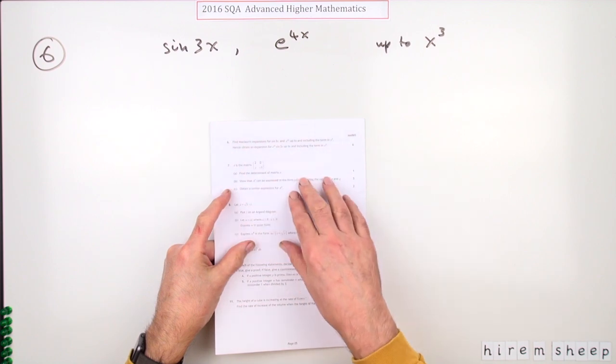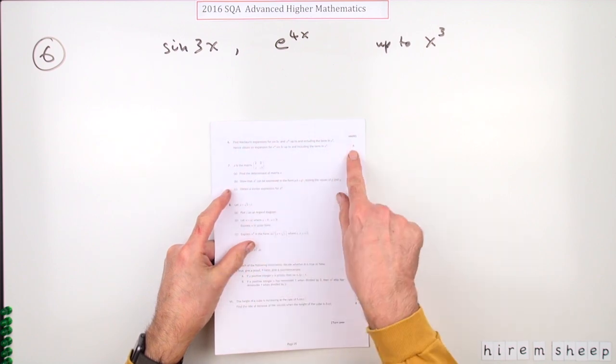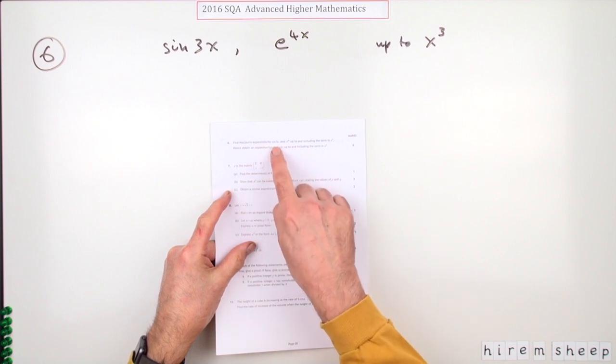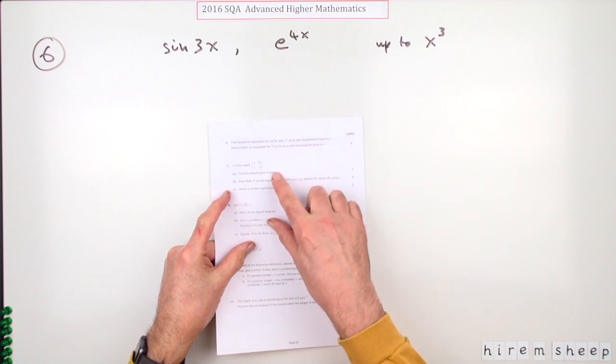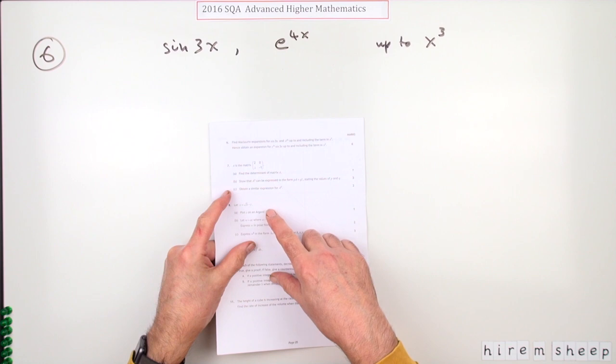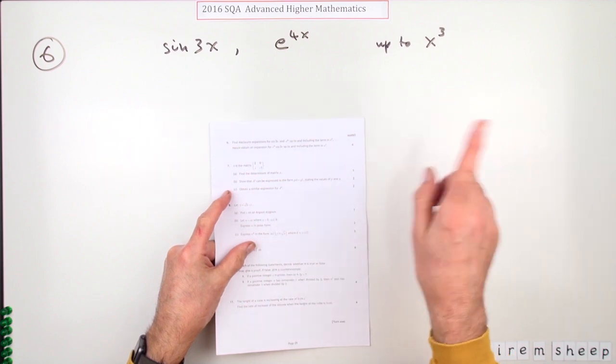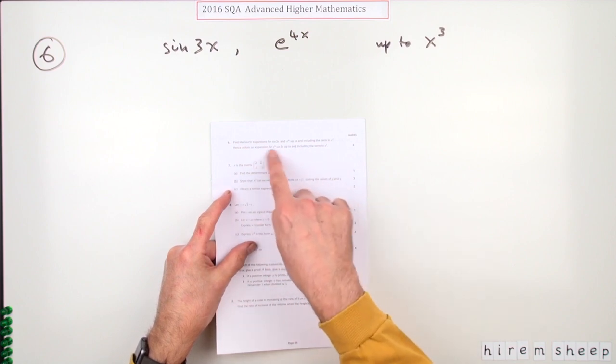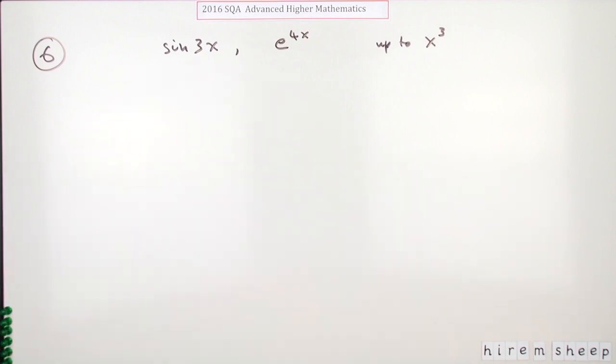Number six then from the 2016 Advanced Higher Maths, we got six marks for a McLaurin's expansion. In fact, look at this one. Signs and E's. Those are ones that you know. You can save a lot of working out if you just memorize E to the X and then get this product of these two.